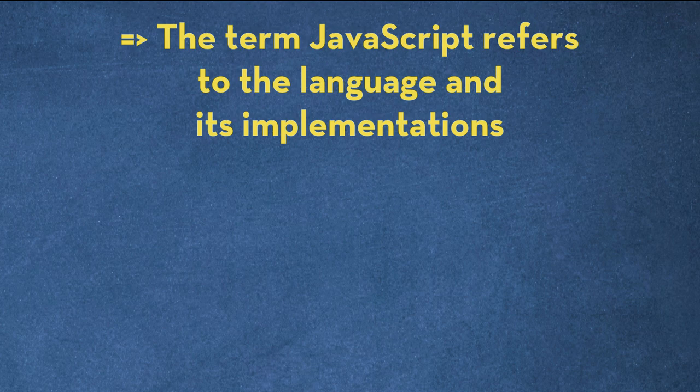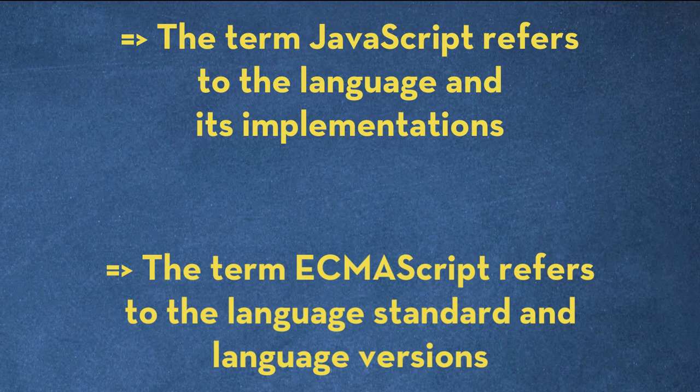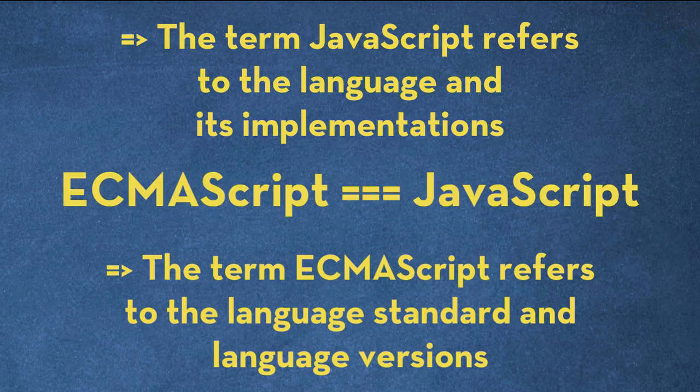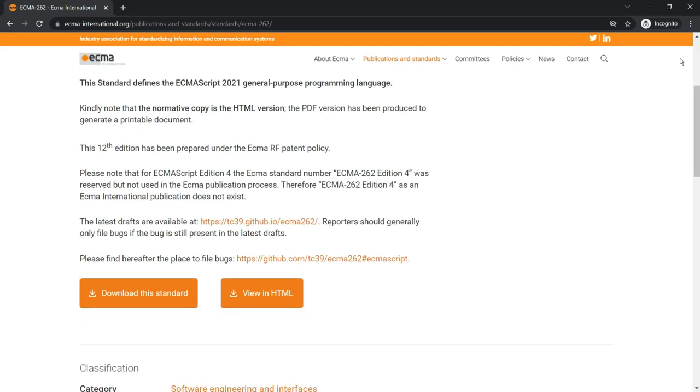For your better understanding: the term JavaScript refers to the language and its implementations, while the term ECMAScript refers to the language standard and its versions. So in fact, there is no real difference — JavaScript is the technical implementation, and ECMAScript manages the versioning. They refer to the same thing.